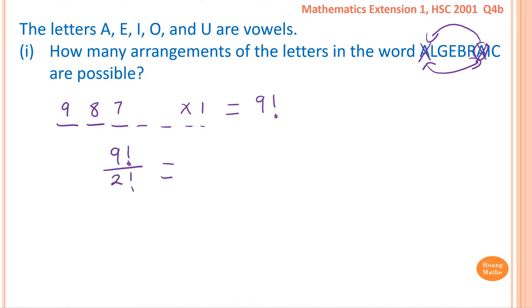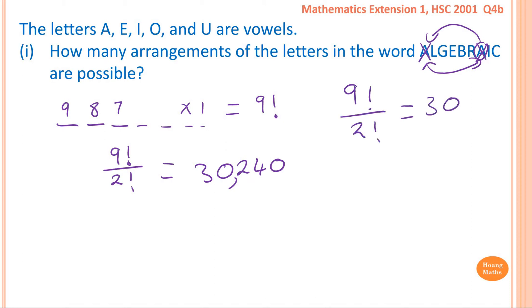So nine factorial divided by two factorial gives the answer: thirty thousand two hundred and forty.